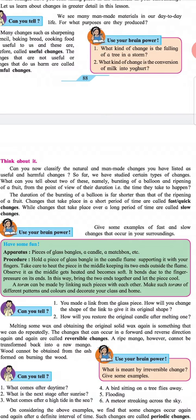Changes that take place in a short period of time are called fast or quick changes. Changes that take place over a long period of time are called slow changes.